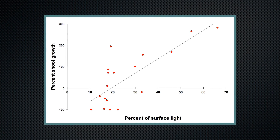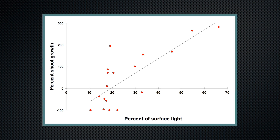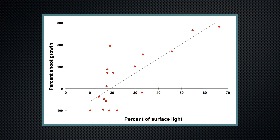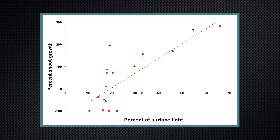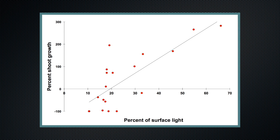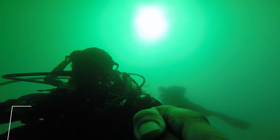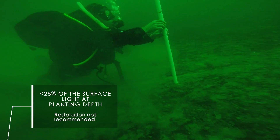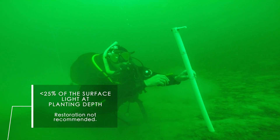This graph shows the results of light measurements and test planting of eelgrass at multiple sites along the northwest coast of Sweden. Based on these results, eelgrass restoration is not recommended when the amount of surface light that reaches the bottom is below 25%.